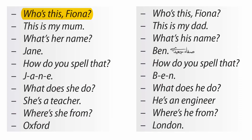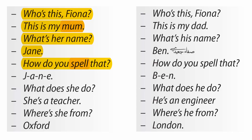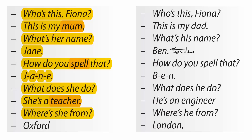Who's this, Fiona? This is my mum. What's her name? Jane. How do you spell that? J-A-N-E. What does she do? She's a teacher. Where's she from? Oxford.